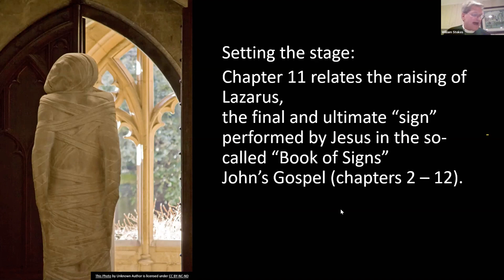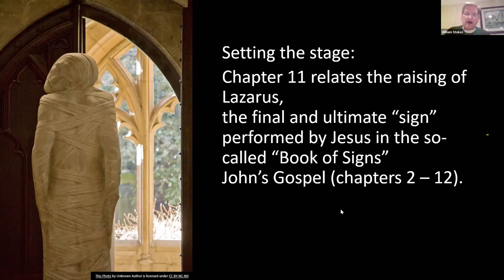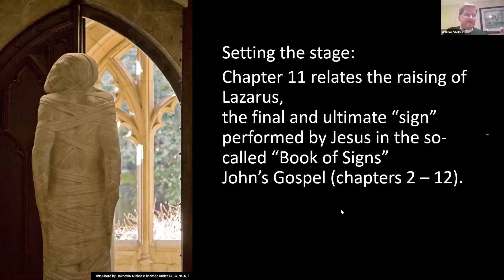Chapter 11 and the raising of Lazarus will bring to a head Jesus' conflict with the religious authorities. That conflict had been building from chapter 9 and through chapter 10, where it has really reached a fever pitch. The raising of Lazarus becomes the trigger that leads the authorities to seek Jesus' death. This is in contrast to the synoptic gospels, which portray Jesus' cleansing of the temple as the precipitating event leading to his arrest and execution. John, on the other hand, had portrayed the cleansing of the temple in chapter 2 of his gospel.